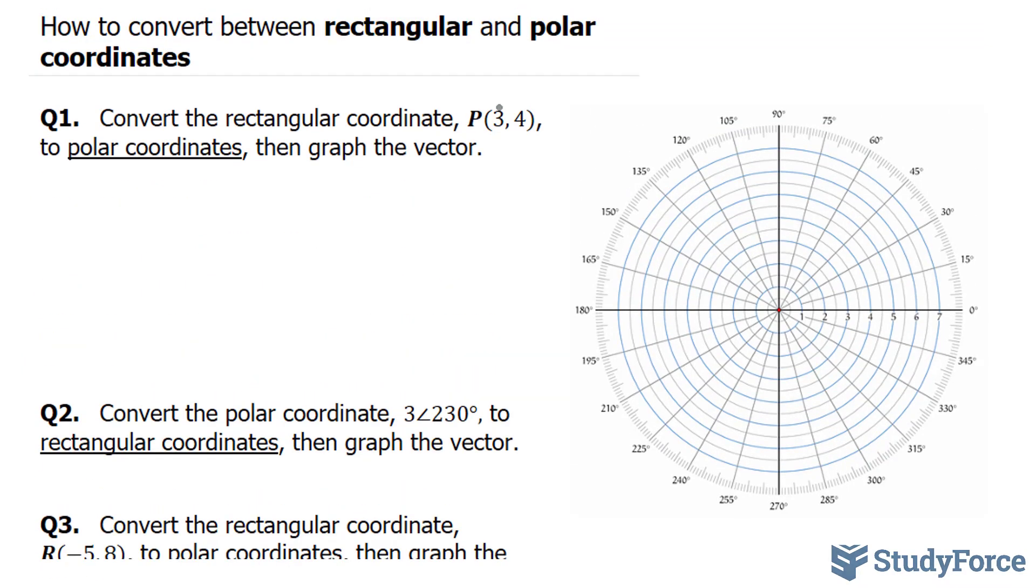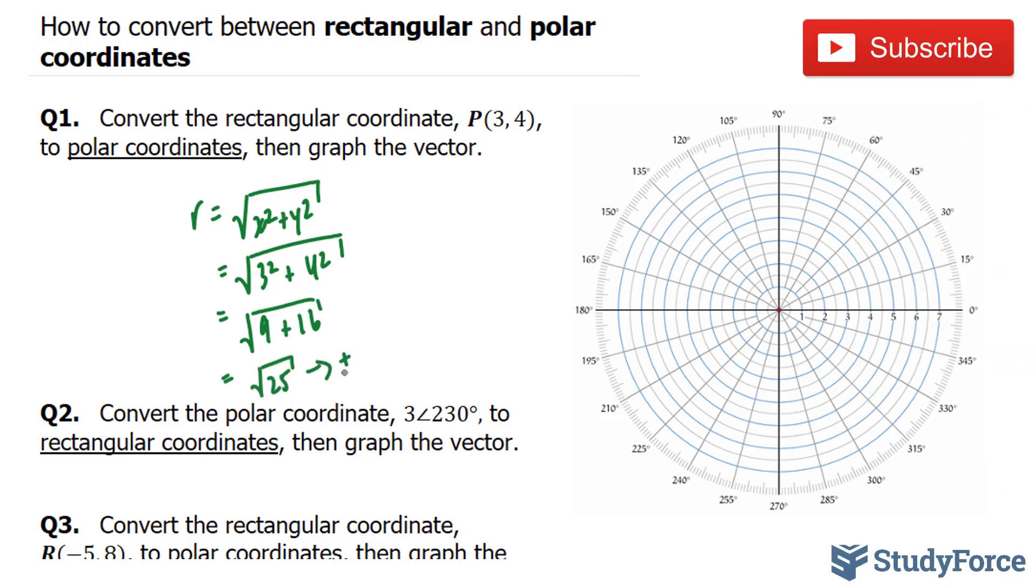What we've been given is x and y, and what we have to find is r, which is the radius, and theta. We'll start by finding r. r is equal to the square root of x squared plus y squared. I'll fill in x and y with my coordinates, 3 squared plus 4 squared. This gives me 9 plus 16, and the square root of that is equal to plus minus 5.